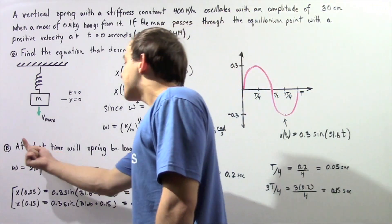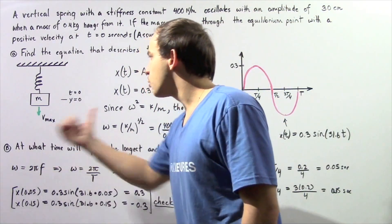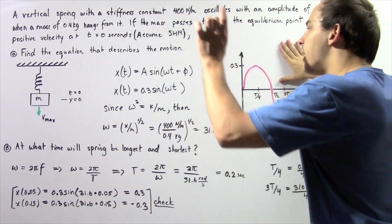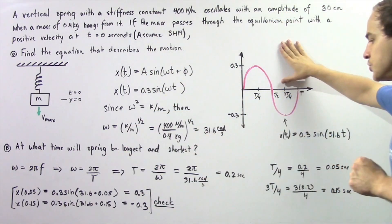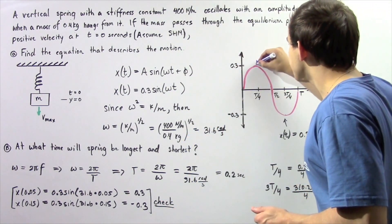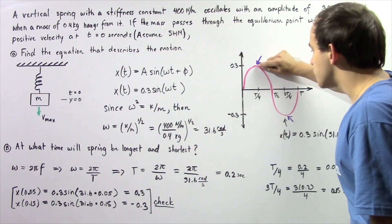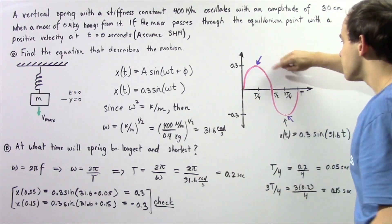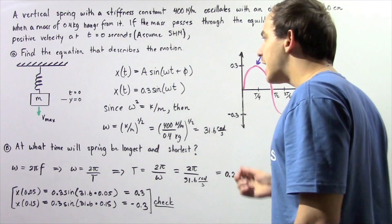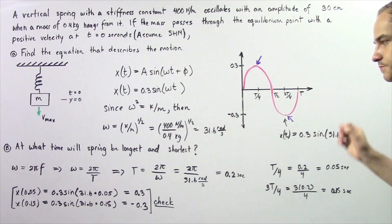Now for part B: at what time will the spring be longest and shortest? We go back to our diagram and look for the maximum positive amplitude and the maximum negative amplitude. We want to find the time intervals corresponding to these two points, which correspond to T/4 and 3T/4 where T is the period. So if we find the period of our oscillation, we can solve for the time.